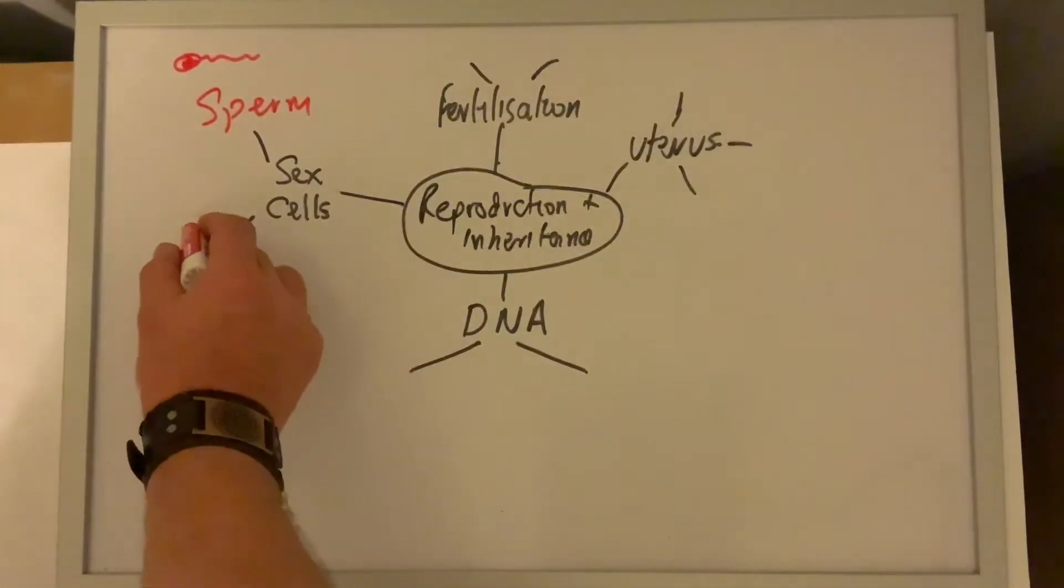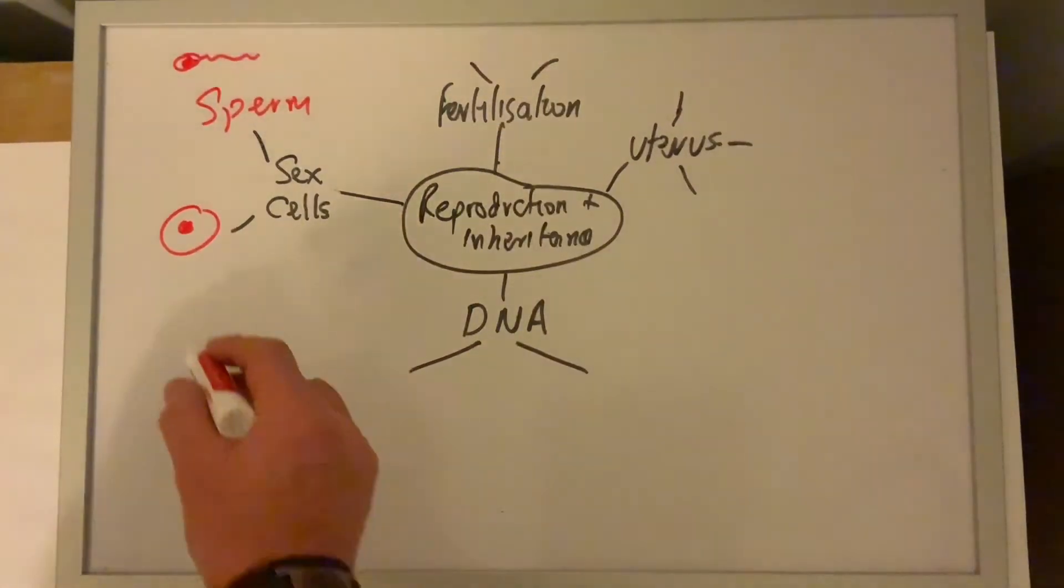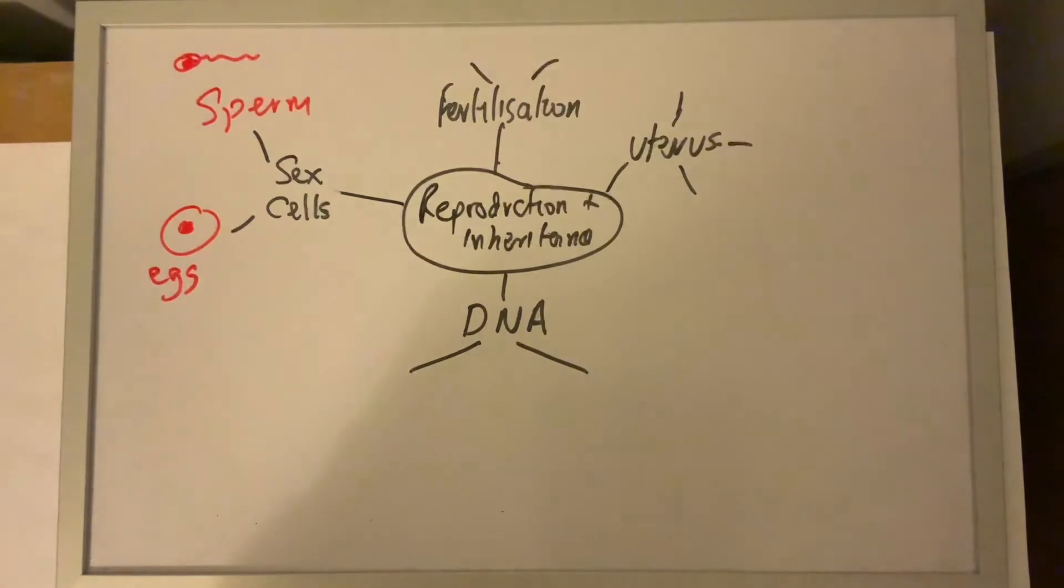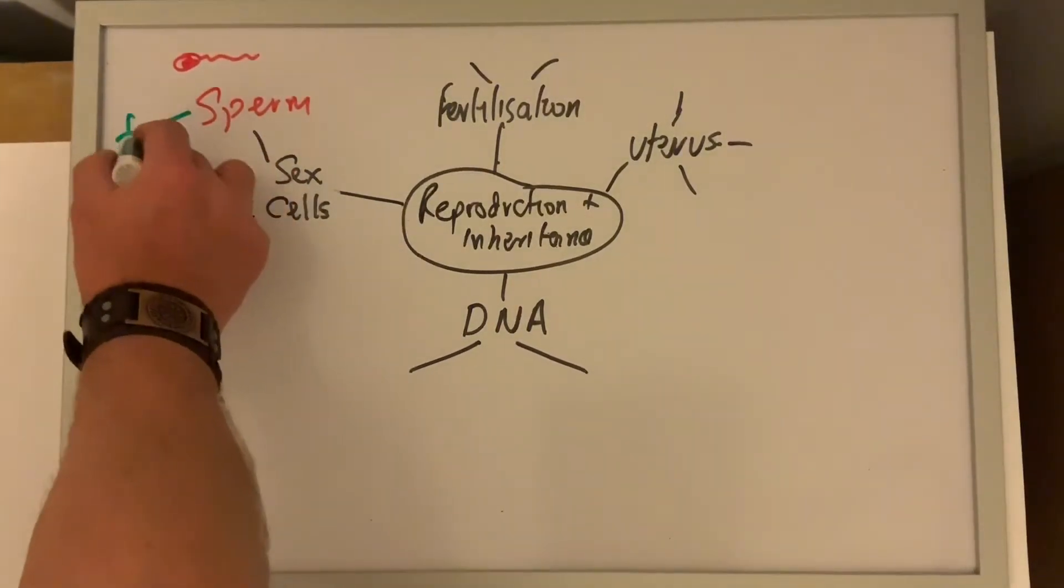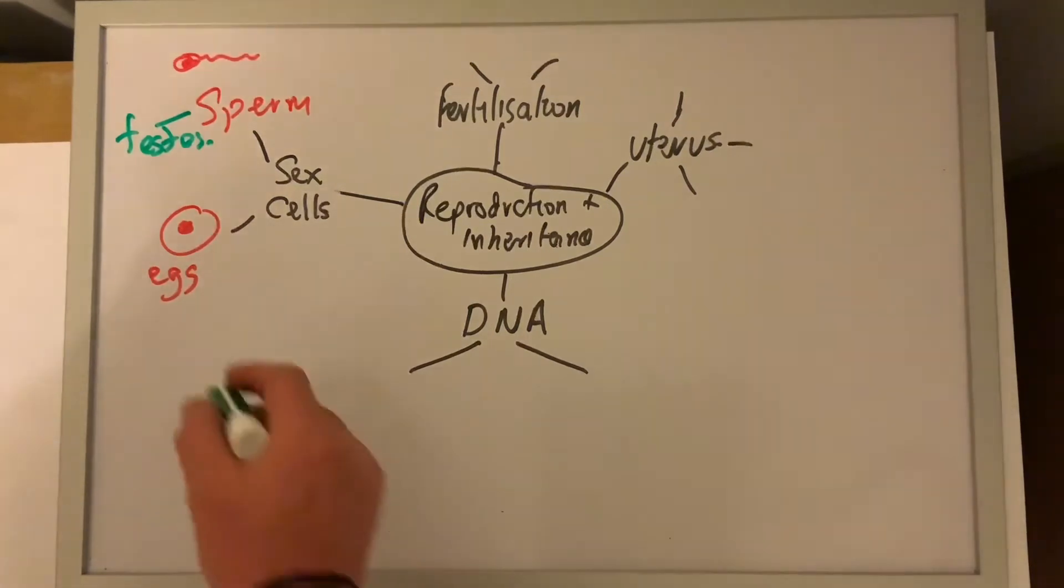A female sex cell is called an egg. This is the largest cell in the human body, and again, there's plenty of cytoplasm there to help after fertilization for the egg to survive until implantation. The sperm is made in the testes, while the egg is made in the ovaries.